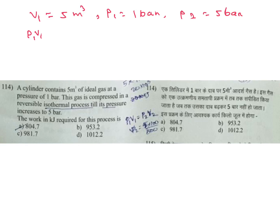As it is an isothermal process, P1 V1 is equal to P2 V2, and N value is 1. From here V2 we can calculate: 1 into 5 divided by 5, so V2 equals 1 meter cube.